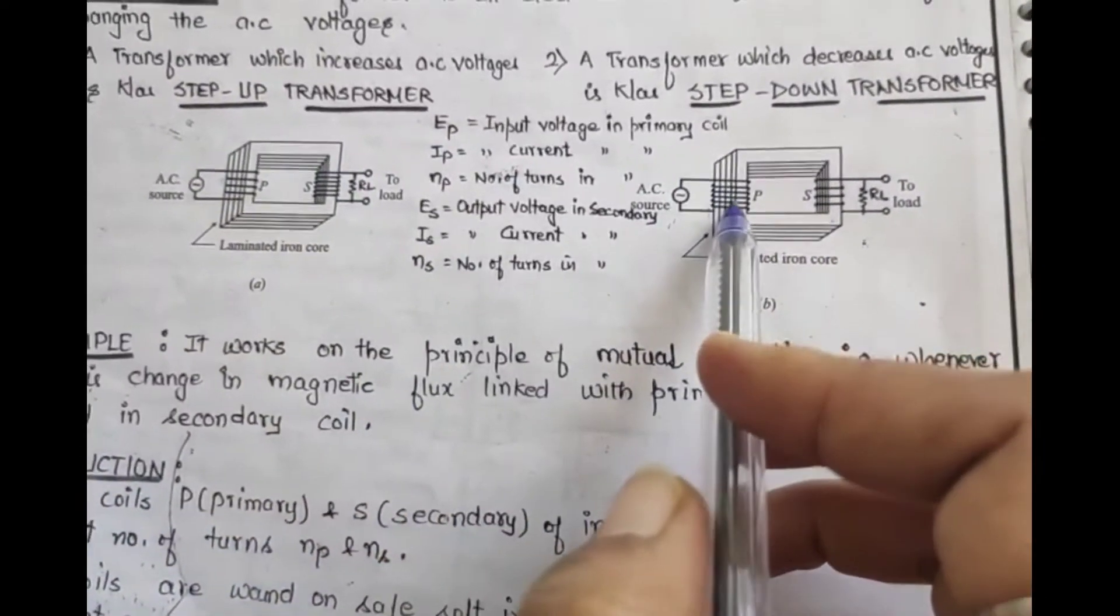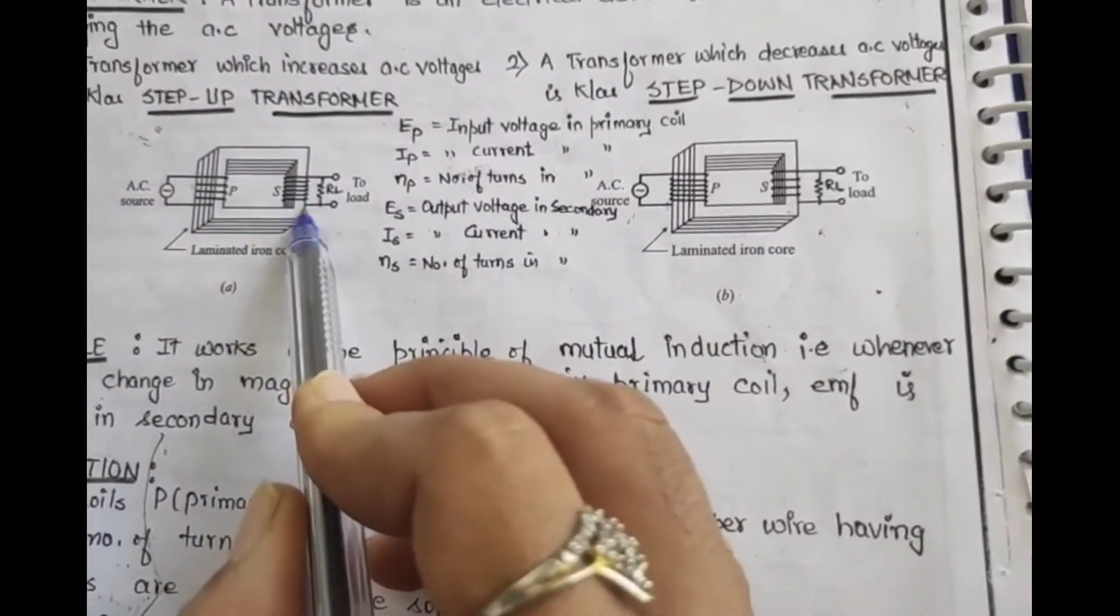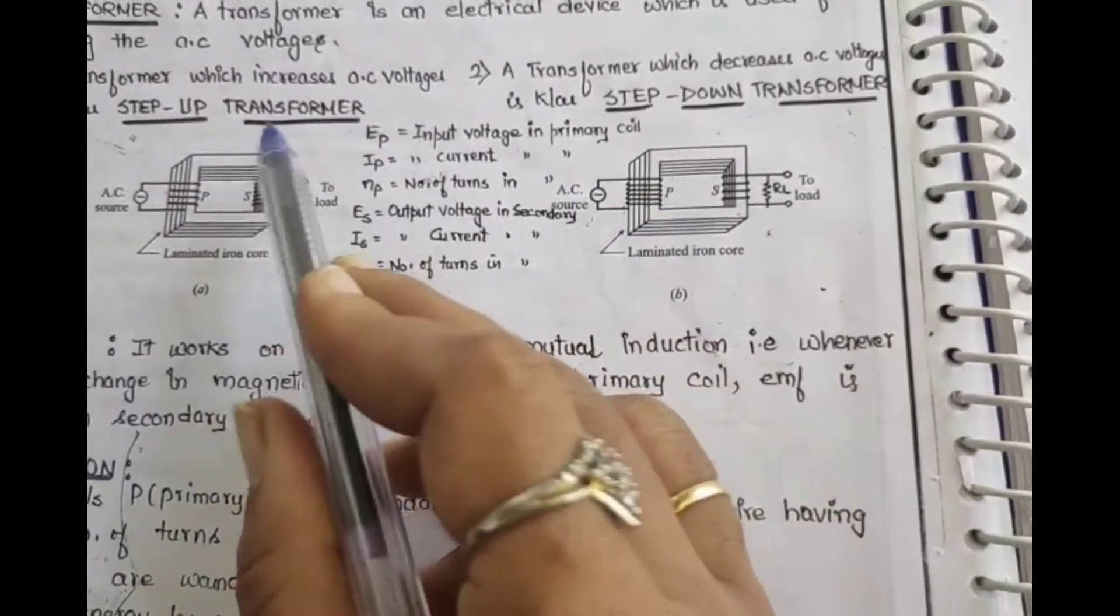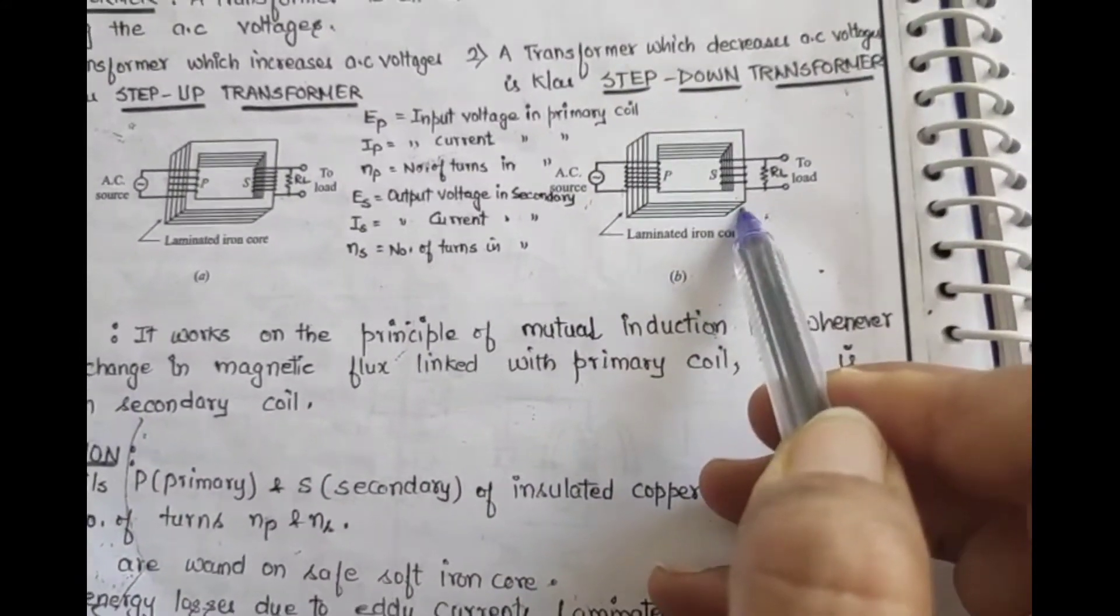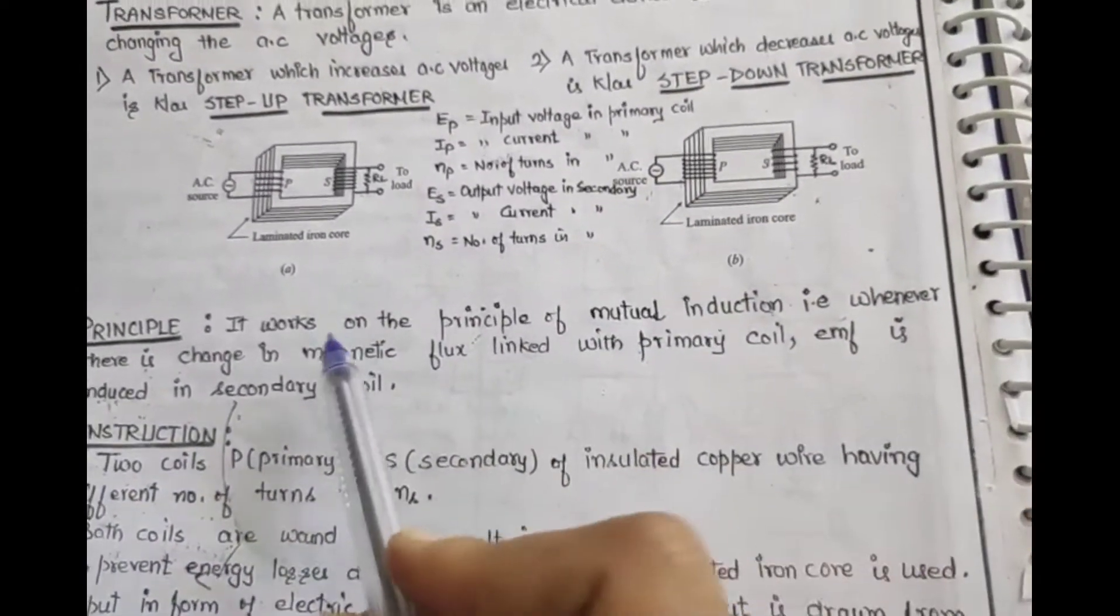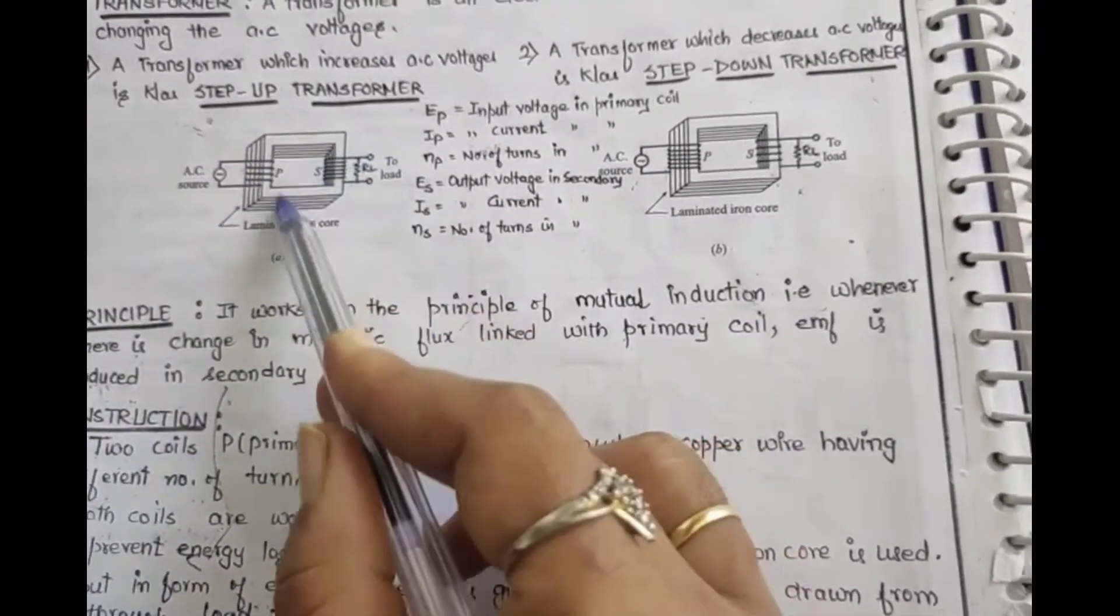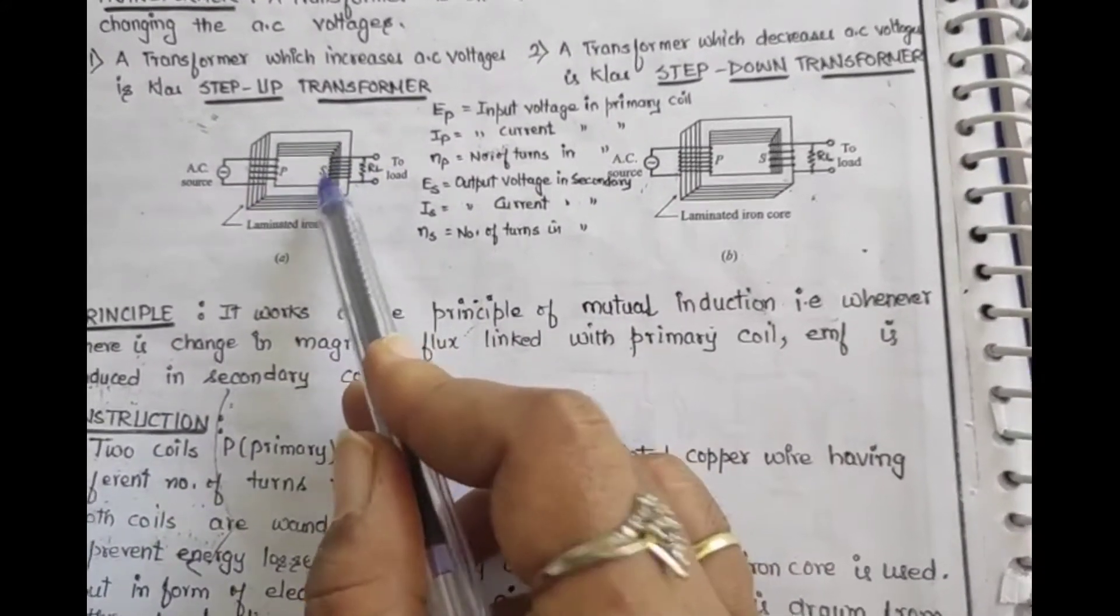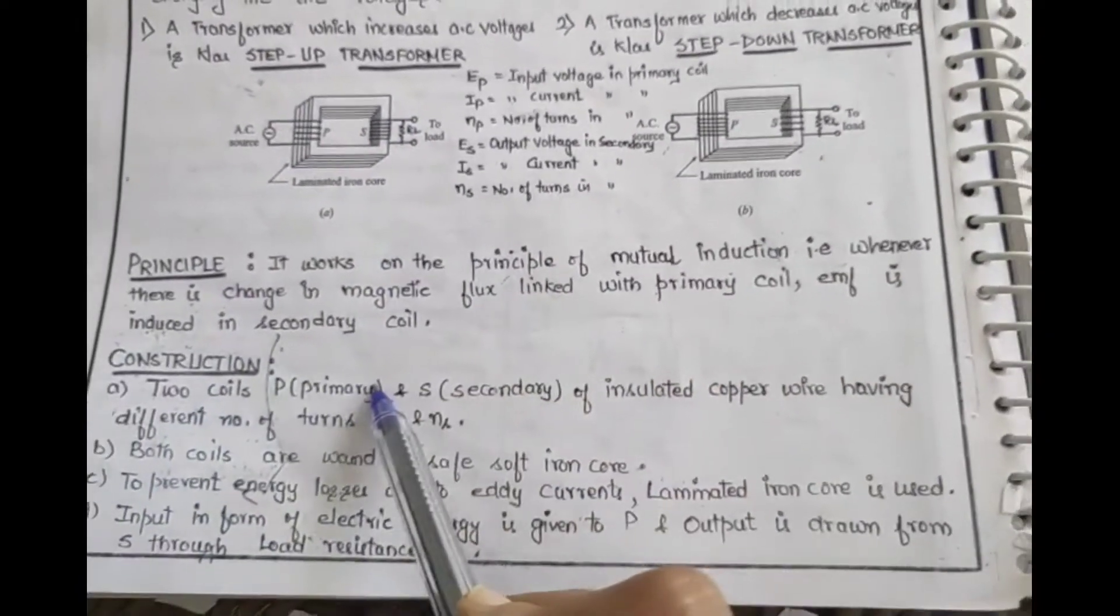In construction, there is a very minor difference in number of turns. In step-up, secondary has more turns. In step-down, primary has more turns. What principle is it based on? It is based on the principle of mutual induction. That is whenever there is a flux change in primary coil, then an induced EMF is developed in secondary coil. And to take output, what is connected across the secondary coil? Load resistance RL.